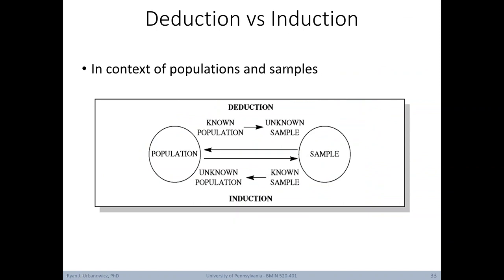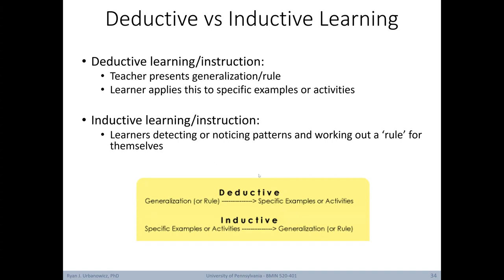We can think about deduction versus induction in the context of populations and samples. With a population — everyone, everything — we can deduce specific examples with certainty from global knowledge. With induction, we start with specific samples and try to make conclusions about a larger population, but since we don't know all the information about it, we're left with uncertainty. We can translate these ideas into learning environments: deductive learning is where the teacher presents a generalized rule and the learner applies it to specific examples. Inductive learning is where learners detect patterns and work out their own rules of thumb.